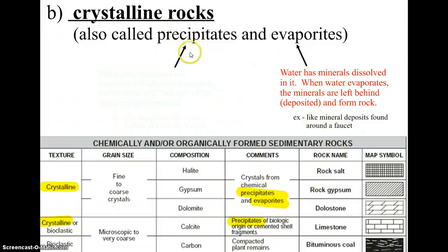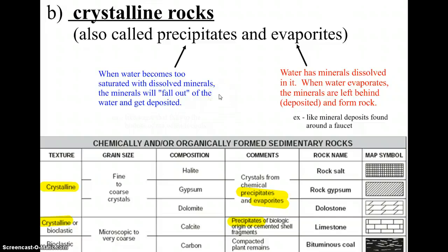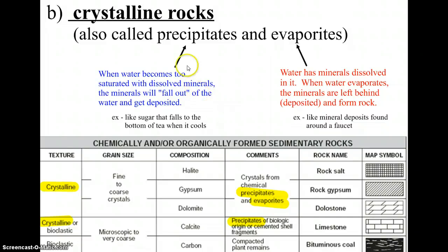Let's talk about precipitates. You know the word precipitation and think of rain or snow falling. Precipitation is also another process: when there's water that is very saturated and very filled with minerals, the minerals can build up and become too heavy to stay suspended in the water, so they fall out and end up on the bottom. You might have seen this when making hot tea — as it cools, sugar crystals fall out and settle at the bottom of your glass. That process is called precipitation.